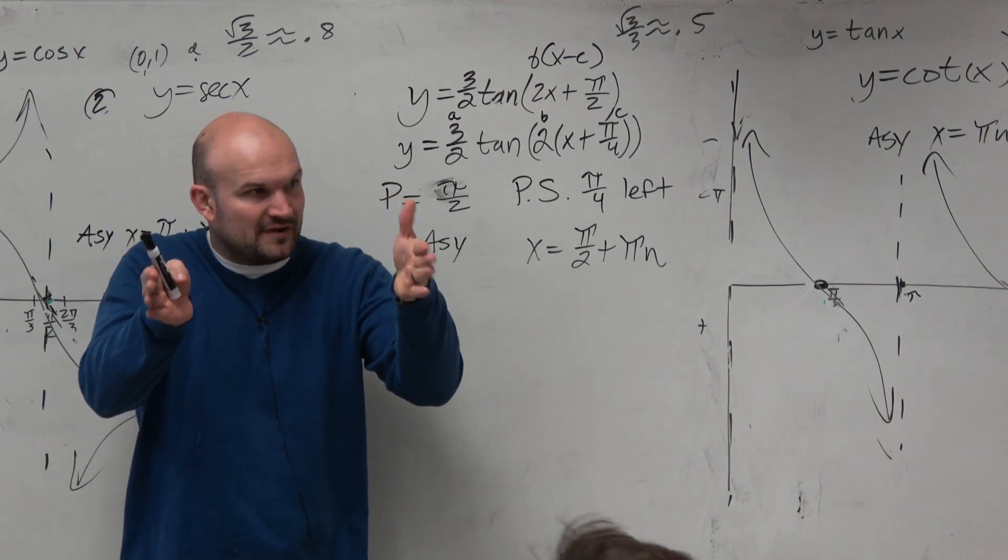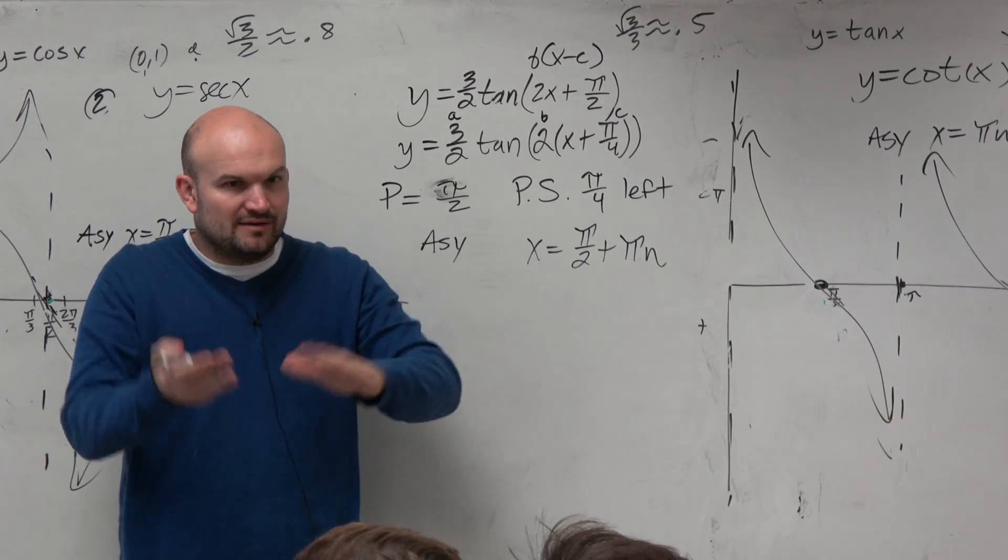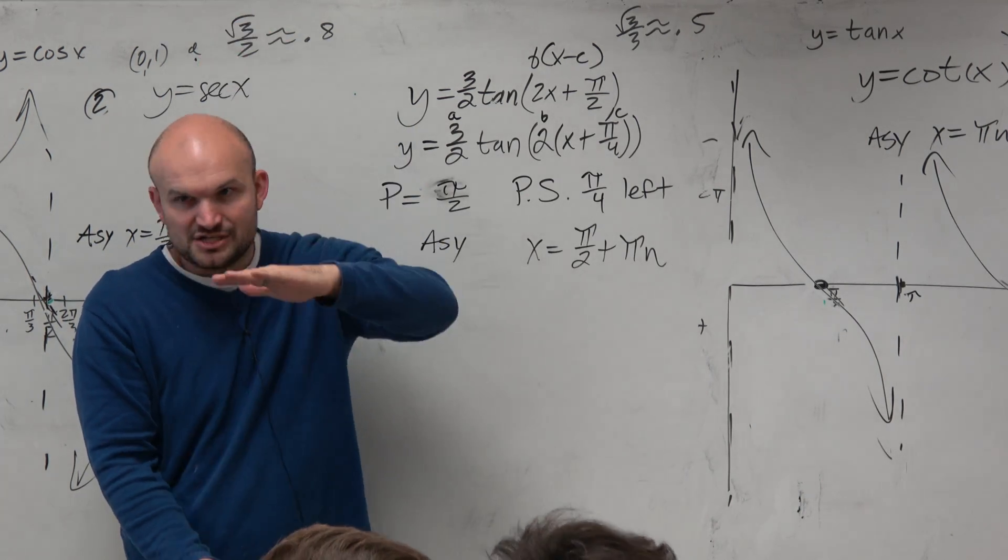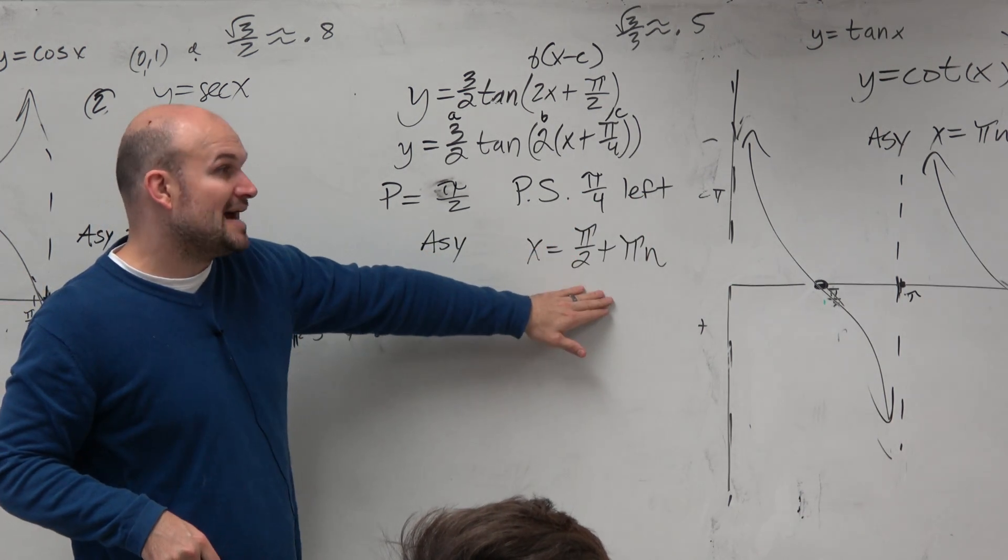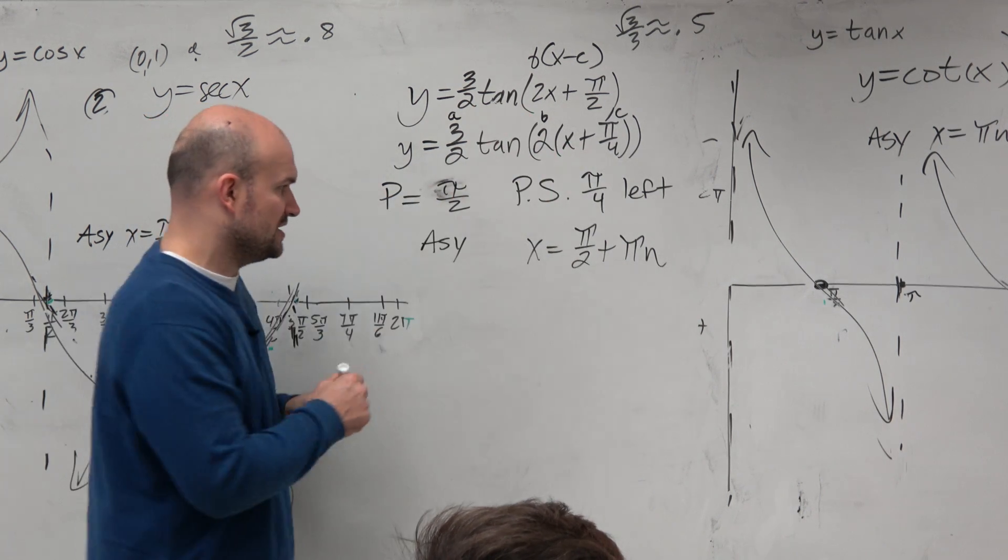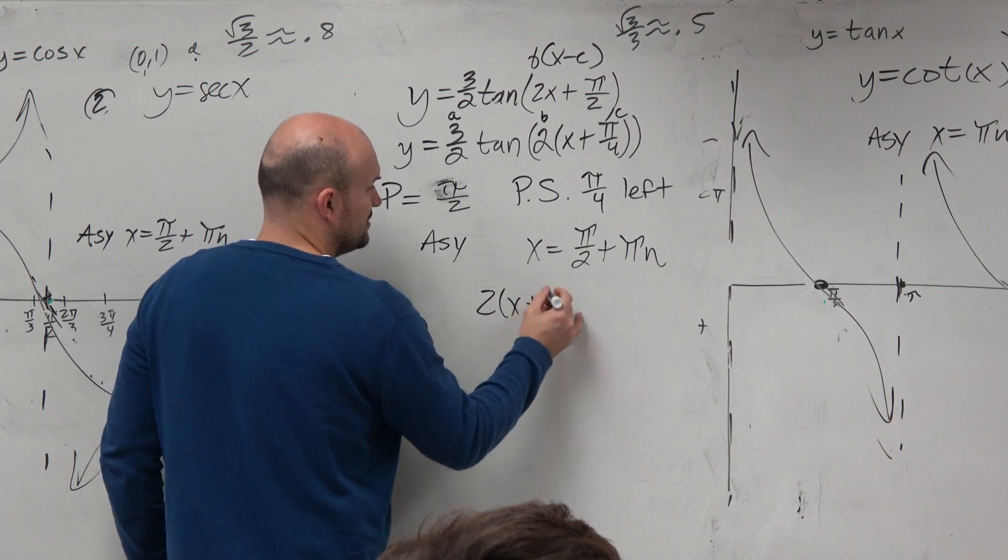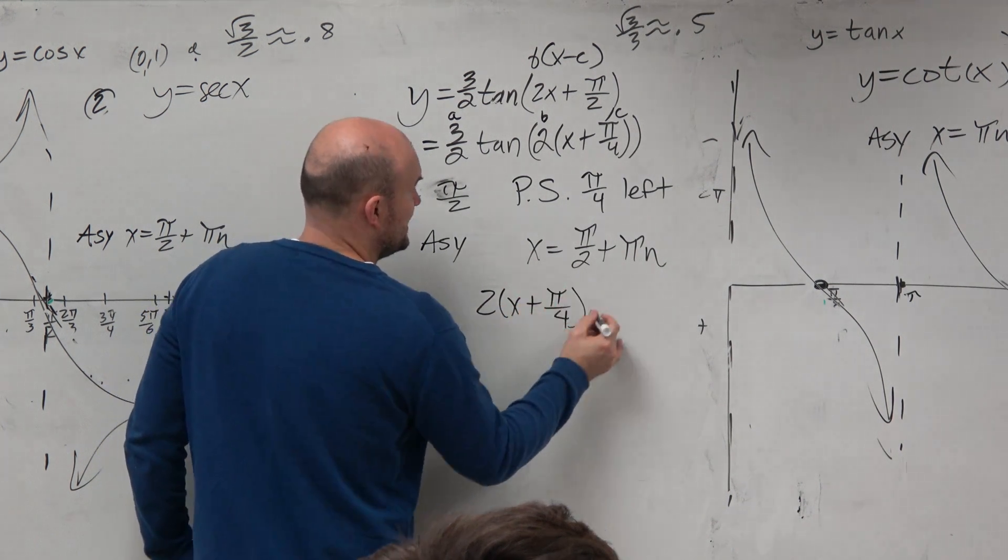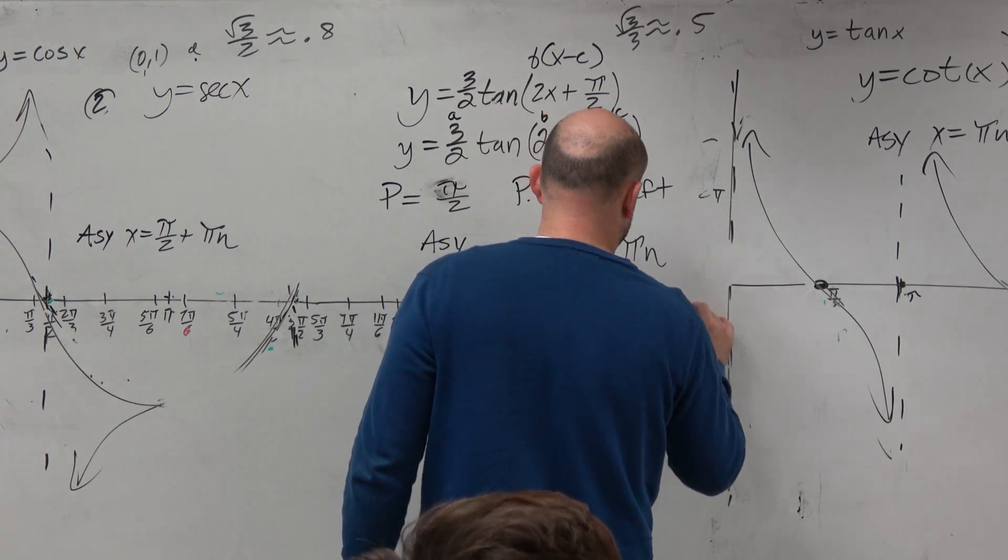The 3 halves does not change anything to the asymptotes. If I have my graph and I have asymptotes, if I move this up or down, that's not changing the asymptotes. If I stretch it up or down, that's not changing where the asymptotes occur. Only horizontal changes. So if I want to know what my new asymptotes are based on these transformations inside of the function, just set whatever's inside the function equal to the original asymptote.